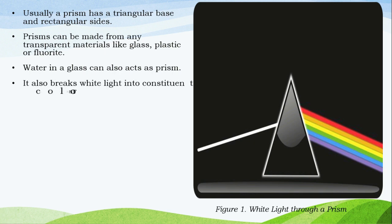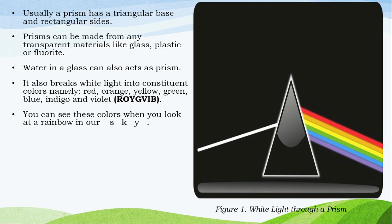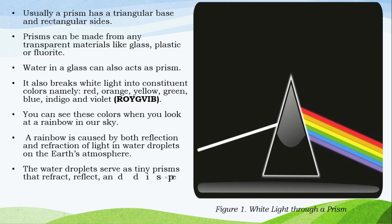It also breaks white light into its constituent colors: red, orange, yellow, green, blue, indigo, and violet. You can see these colors when you look at a rainbow in the sky. A rainbow is caused by both reflection and refraction of light in water droplets in the Earth's atmosphere. The water droplet serves as a tiny prism that reflects and disperses sunlight into the spectrum of light appearing in the sky.